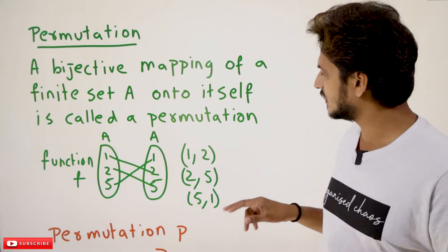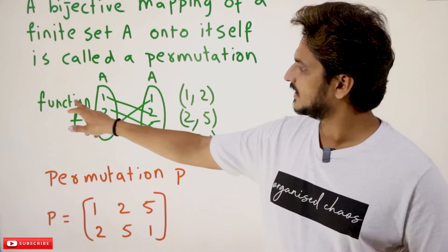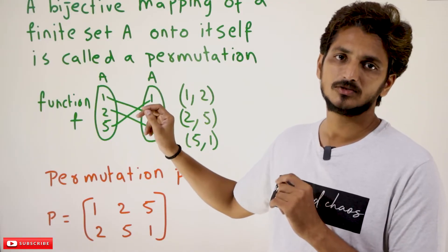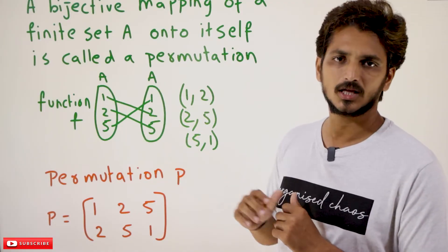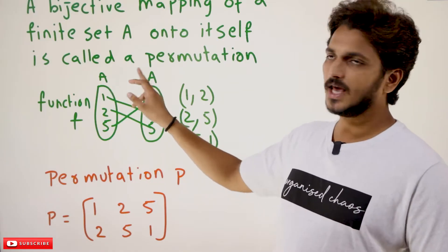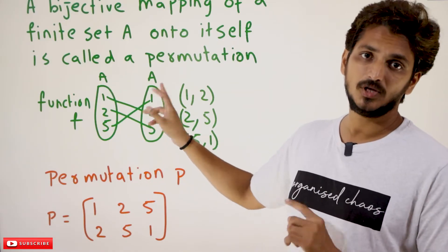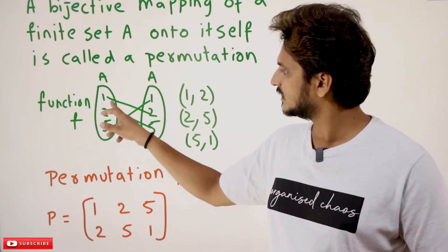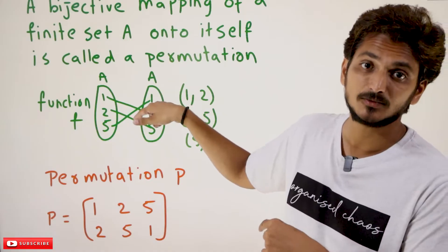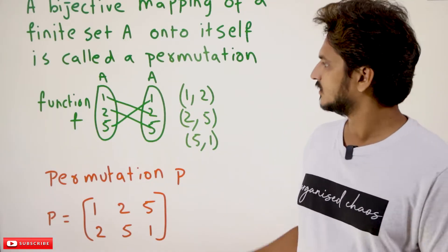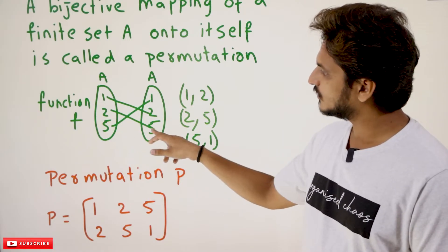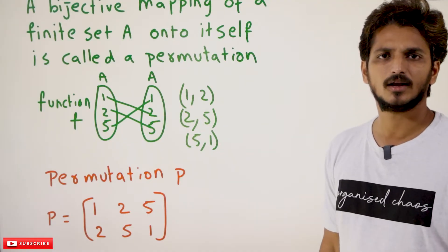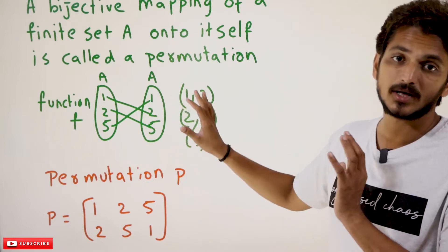With an example, you are going to get clarity. Let's take a function F from A to A. The elements that belong to A are 1, 2, and 5. The mapping should be A to A and it should be one-to-one and onto. If it is one-to-one and onto, then we say this mapping is a permutation. For example: 1 mapping to 2, 2 mapping to 5, 5 mapping to 1. This we call a permutation.